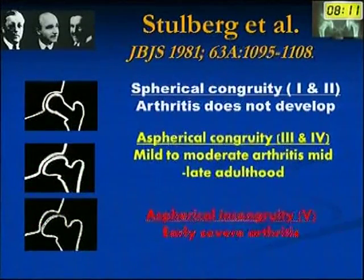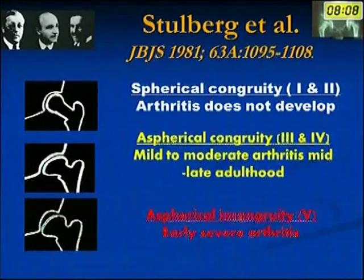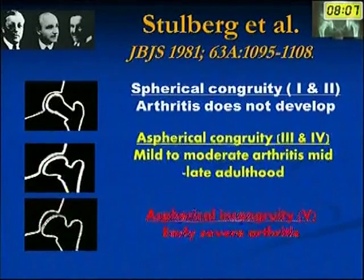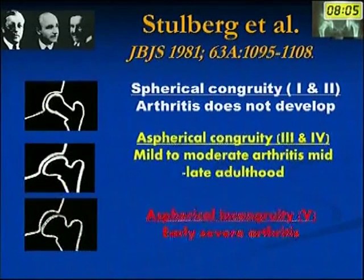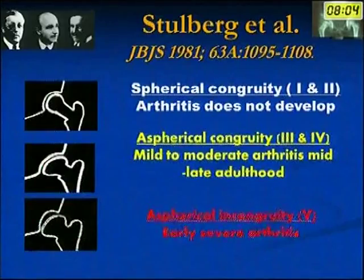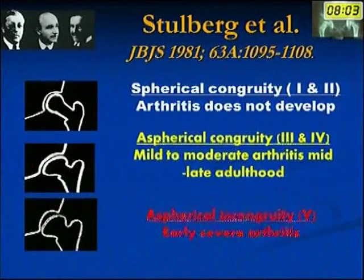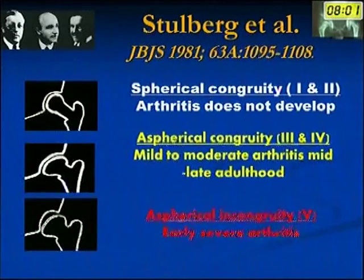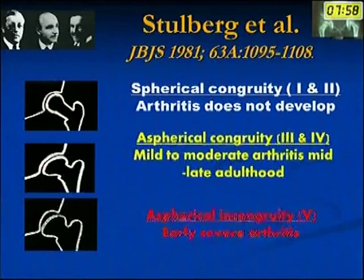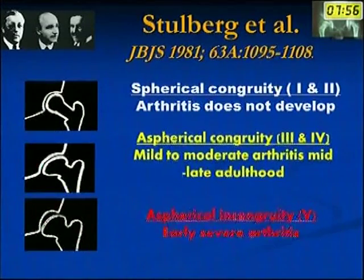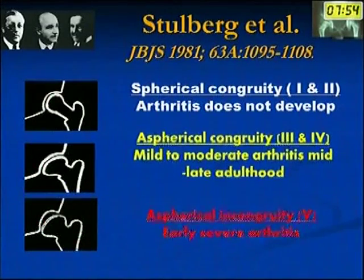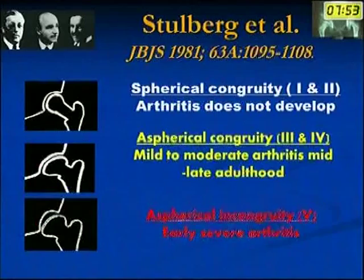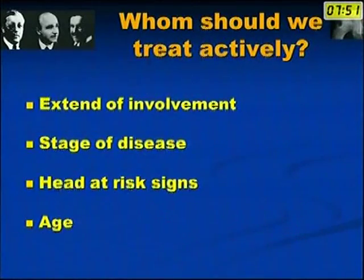According to Stulberg's classification, Stulberg 1 and 2 give reasonably good results and arthritis does not occur, while Stulberg 5 leads to early severe arthritis. So our aim should be to place these femoral heads in the first and second group where arthritis does not occur.